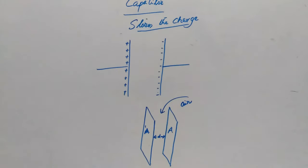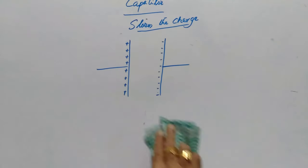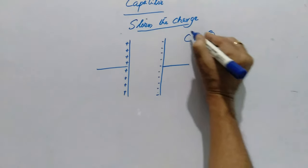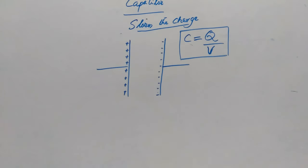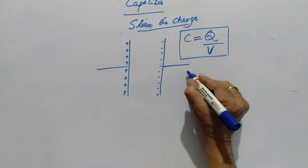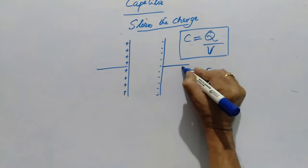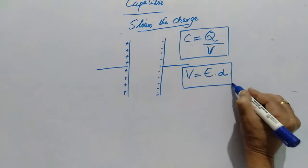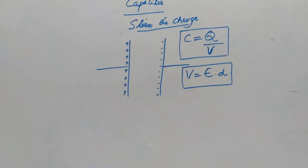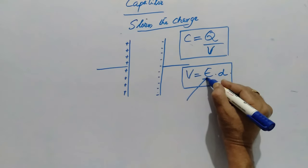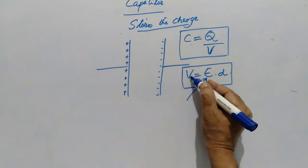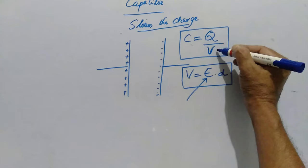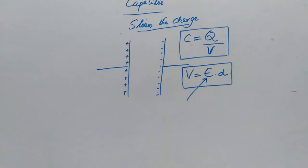To calculate capacitance, we must know the charge and potential using the formula C = Q/V. Potential can be calculated using the formula: electric field times the distance between the two plates. If we find the electric field, we can get the value of potential, and substituting into this equation we get the value of capacitance.